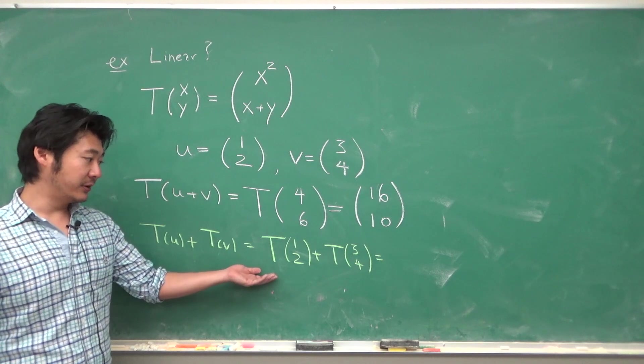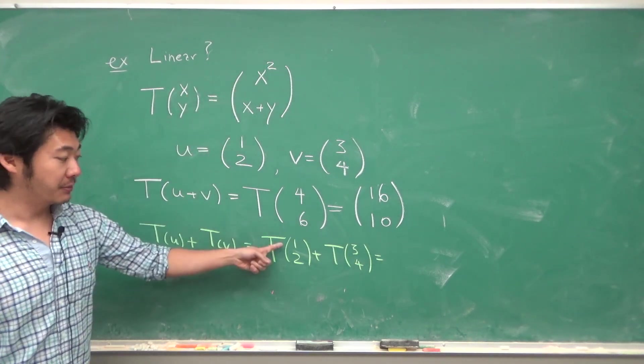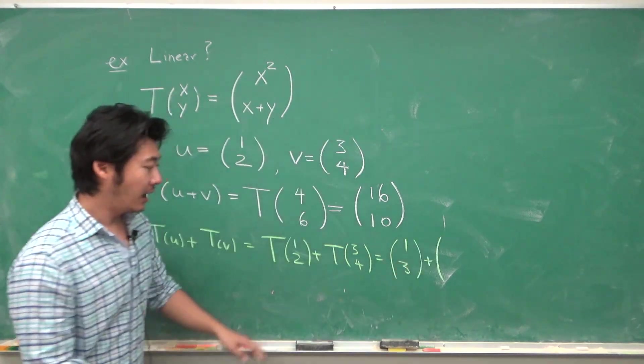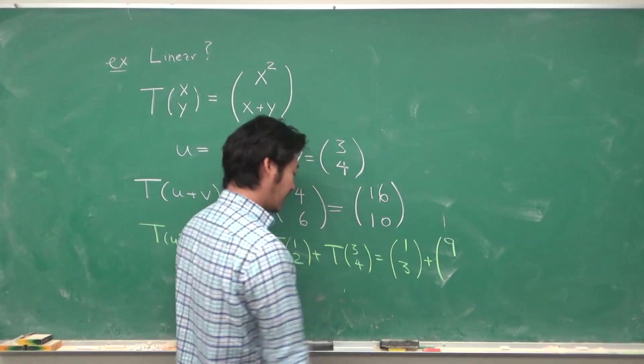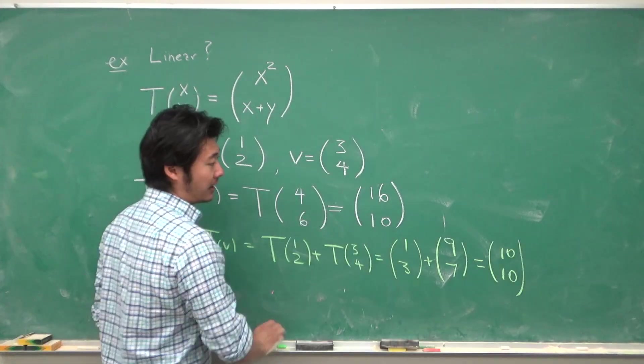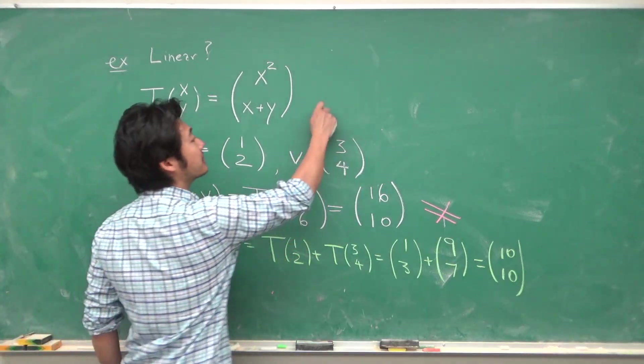So we need to compute T of (1,2) and T of (3,4). T of (1,2) is the first component squared and x plus y, so 1 plus 2. And T of (3,4) is the first component squared and x plus y. And they are not equal to each other. So this is not linear.